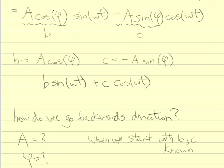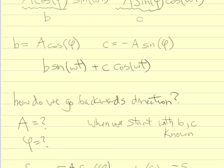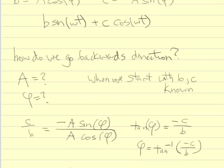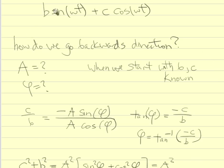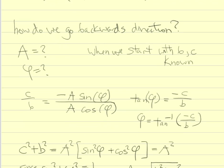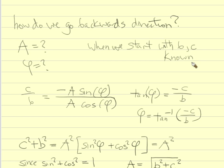That gives us the forward direction — showing that our single-sine expression can be written in terms of sines and cosines. But to convince ourselves they're truly equal, we should also go the other direction: starting with just sines and cosines, can we get to an expression involving only a sine? If they're really the same thing, we should be able to go both ways. So let's start assuming we know b and c, and find the amplitude A and phase angle phi.